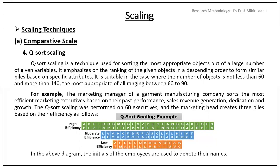So, their efficiencies are given high efficiency, moderate one and low one. In the above diagram, the initials of the employees are used to denote their names. You can see the initials in the diagram.